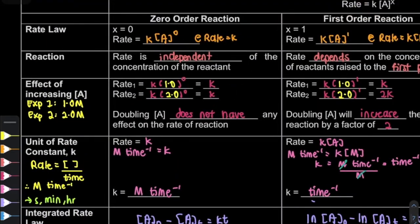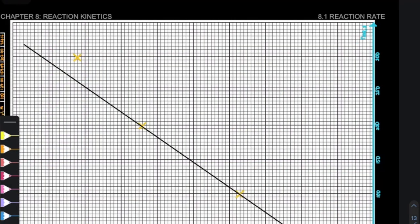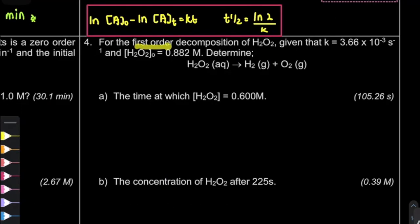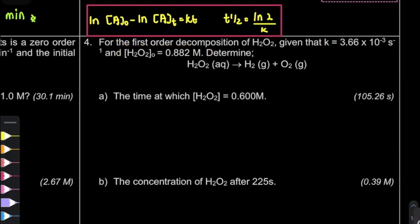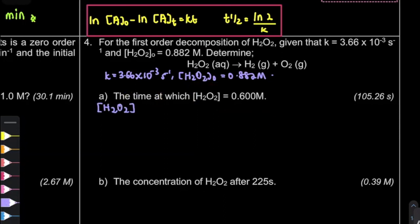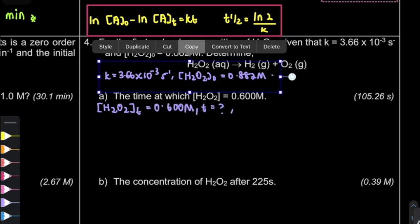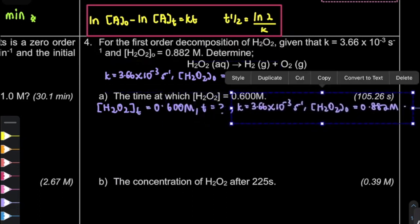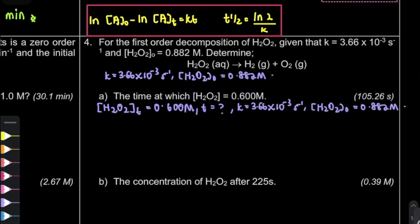You can also refer to page 7 for the unit of rate constant. For question number 4, this is a first-order reaction. I'm going to extract the information — I get K and the initial concentration. Question A specifically asks: what is the time when the concentration is 0.6 molar? We're going to use the integrated rate equation formula for first order.